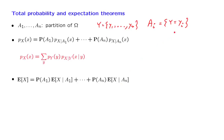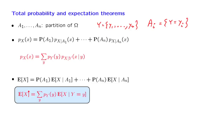Again, letting the event that Y takes on a specific value be a different scenario, we obtain the following version of the total expectation theorem. We have a sum of different terms, and each term is the probability of a given scenario times the expected value of X under that particular scenario.